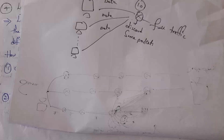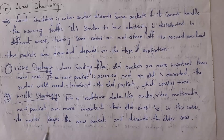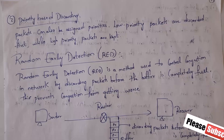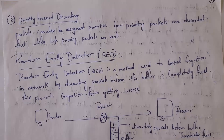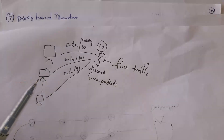In computer networks, old data packets are considered important compared to new packets. The milk strategy is the opposite of the wine strategy — in the milk strategy, new packets are accepted and old packets are rejected. So if the router cannot handle too much data, the router will accept new packets and reject old packets. Load shedding also follows another technique called priority-based discarding. In priority-based discarding, whenever a computer sends data, it includes a priority number along with the data. Data with the highest priority number is accepted, and data with a small priority number is rejected when the router cannot handle the packets.